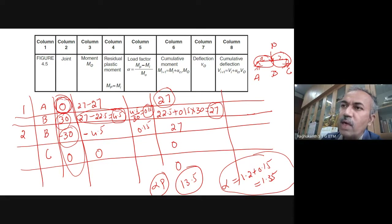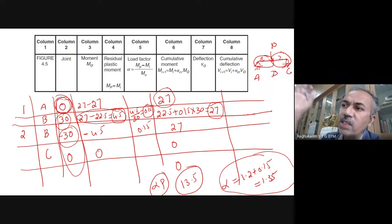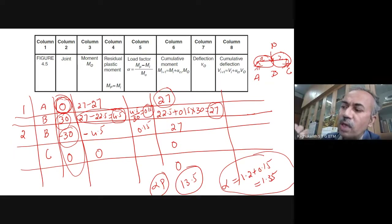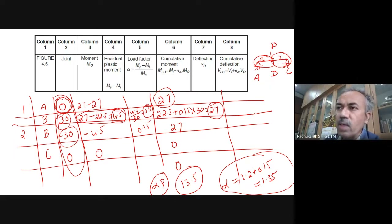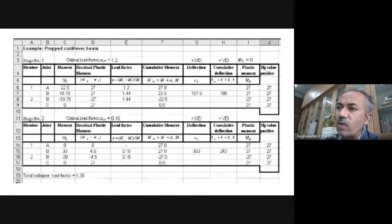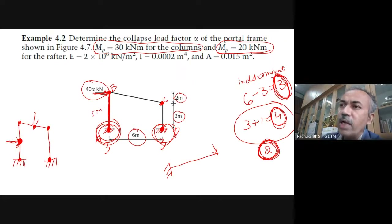From stage one, the propped cantilever; stage two becomes a simply supported beam because a hinge has already formed. Then you do the calculations, sum up the load factors, and you get the total load factor for your beam.